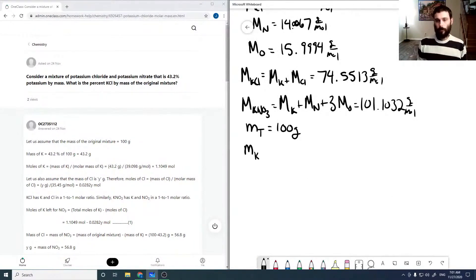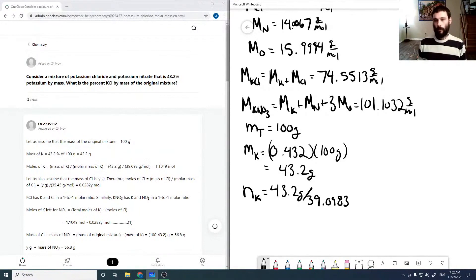So if our end total is 100 grams, then that means that our mass of potassium is 43.2% of that, or 0.432 times 100 grams, which is equal to 43.2 grams. That means the moles of potassium are 43.2 grams over the molar mass of potassium, which is equal to 1.10491 moles, keeping an absurd amount of digits there.